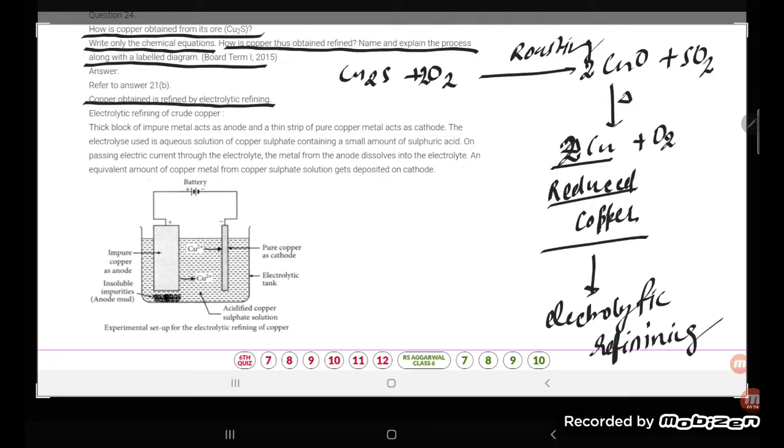Electrolytic refining of crude copper - crude copper means impure copper. They are saying a thick block of impure metal acts as anode.